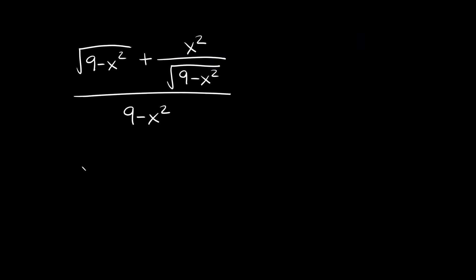Here's the second example: we have the square root of 9 minus x squared plus x squared over the square root of 9 minus x squared, all over just 9 minus x squared.